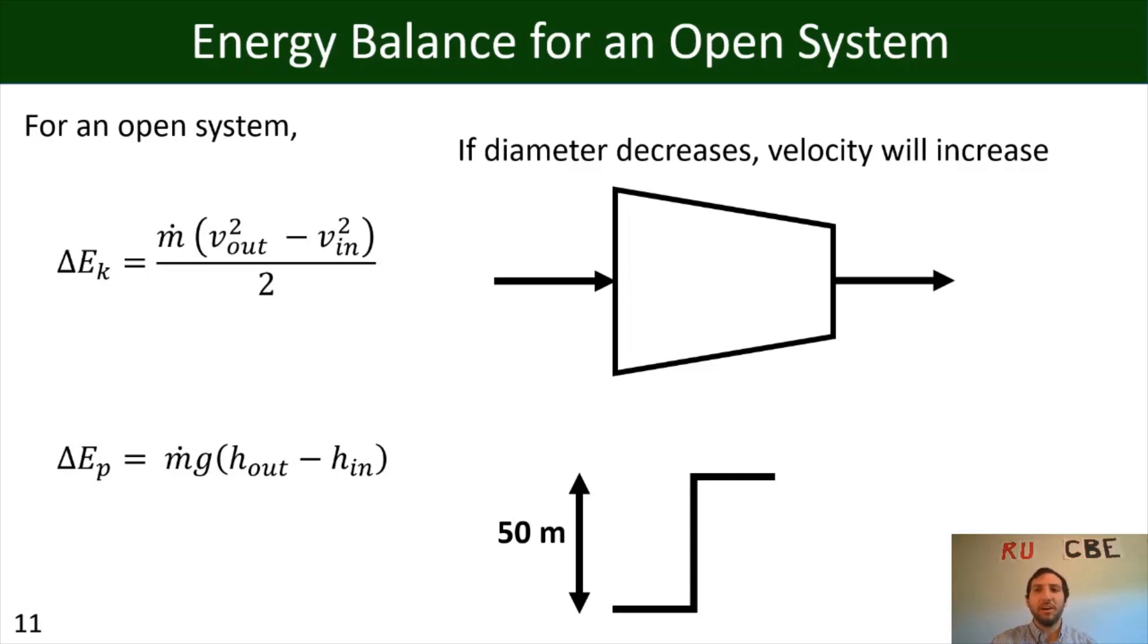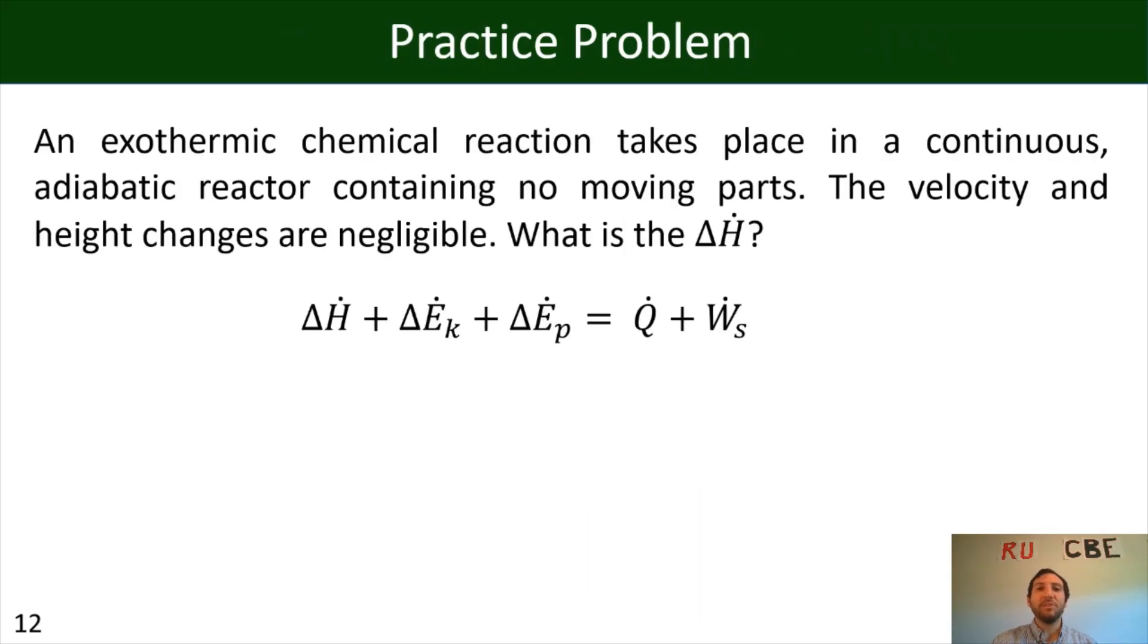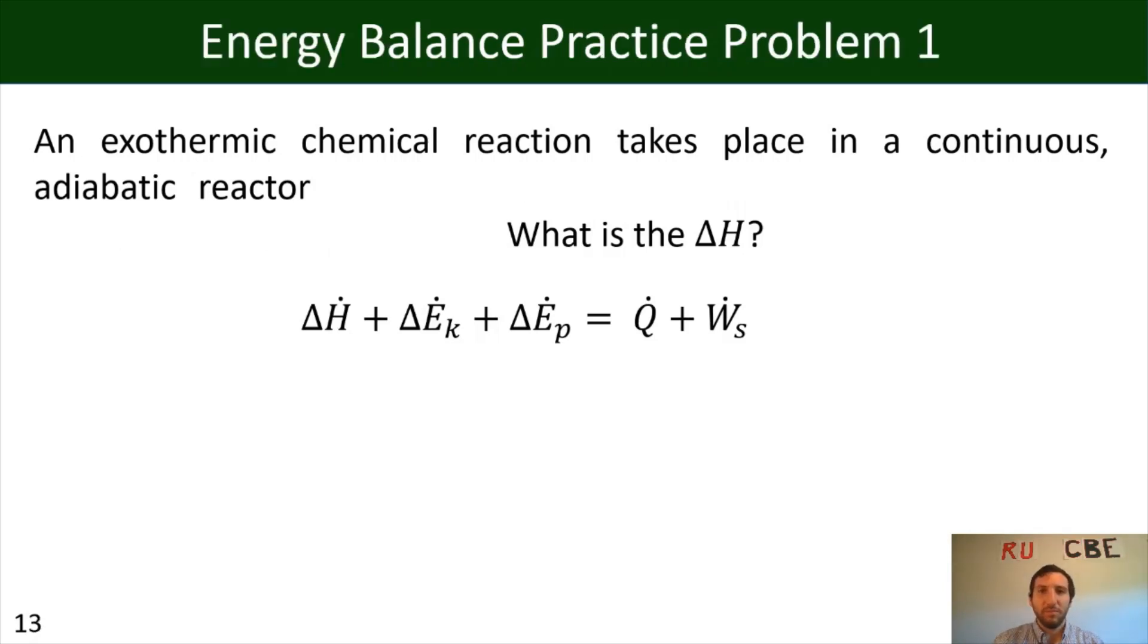So now just moving on, going into our next practice problem, we have an exothermic chemical reaction taking place in a continuous adiabatic reactor that contains no moving parts. The velocity and height changes are negligible, and so the question is, what is the delta H? All right. So let's try and break this problem down piece by piece and just find all the useful pieces of information in this problem. So if I just eliminate all the text and just start from the beginning and just try to pick out some key words. So if we look through this first part, we see that we have an exothermic chemical reaction, doesn't really help us, it's continuous, all right, that indicates it's an open system, and we have an adiabatic reactor.